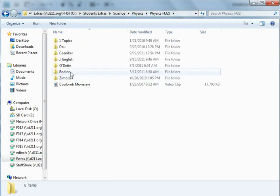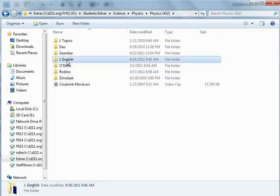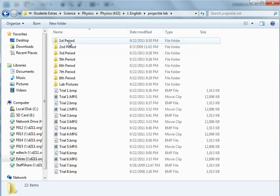Open up Physics 432, go to My Folder, Projectile Lab, and you'll see all the different trials here.